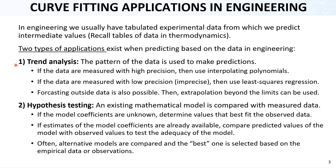Two types of applications exist for predicting values based on data in engineering. The first is trend analysis, where the pattern of data is used to make predictions. If the data are measured with high precision, use interpolating polynomials, because the curve passes through each point. But if the data are imprecise or have errors, instead of passing through each data point we can have a general trend using least squares regression, passing in between data points as an average regression line.